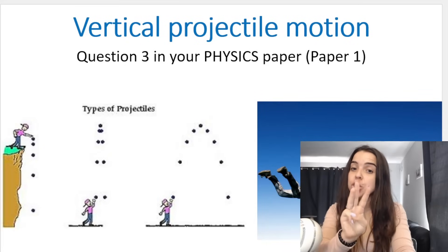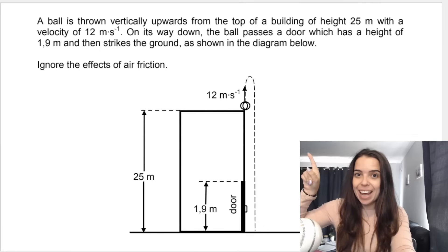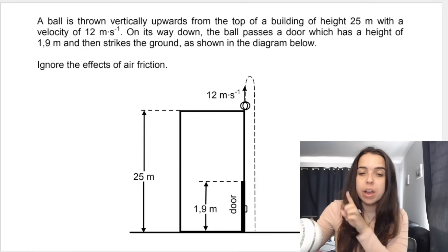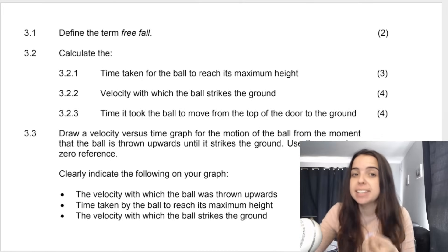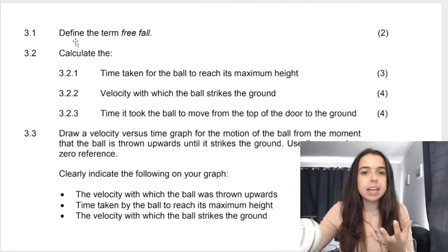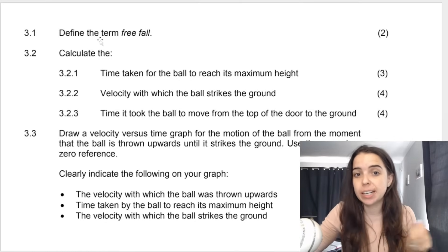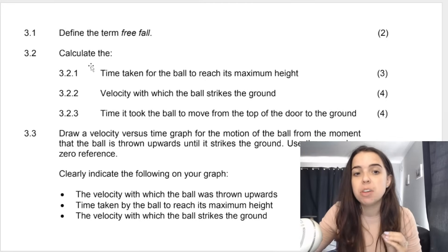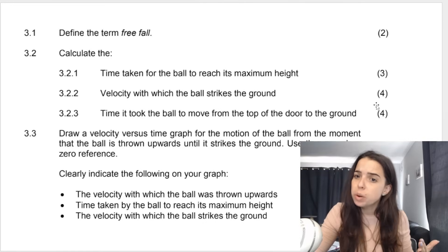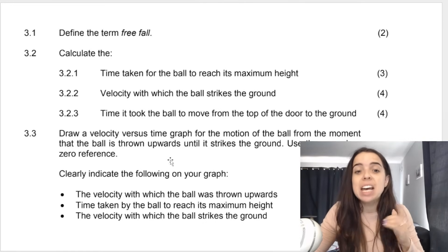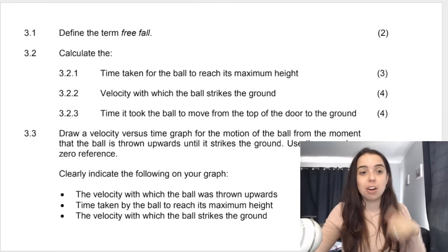Vertical projectile motion is question three, usually in your physics paper — paper one. This is an example of how a vertical projectile motion question looks and the types of questions you can expect. This is standard across all physics questions: you'll most likely get asked a definition, then some calculation questions — three or four, up to five or six marks — more difficult questions, and then either drawing a graph or interpreting a graph.